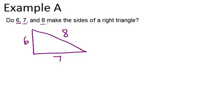So to test this, we have to see if it works with the Pythagorean theorem. So what we're going to be checking is if 6 squared plus 7 squared equals 8 squared. Remember the side that might be the hypotenuse always has to go by itself in the equation, and the two legs are connected with a plus sign. So let's test this.